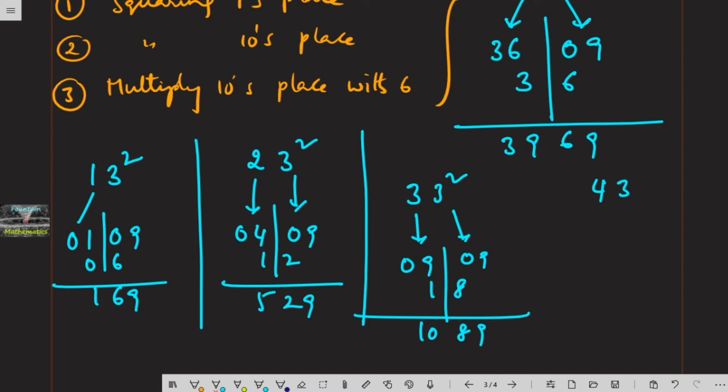Next, 43 square: 4 square is 16, 3 square is 09, and 4 into 6 is 24. So we are getting 1,849.